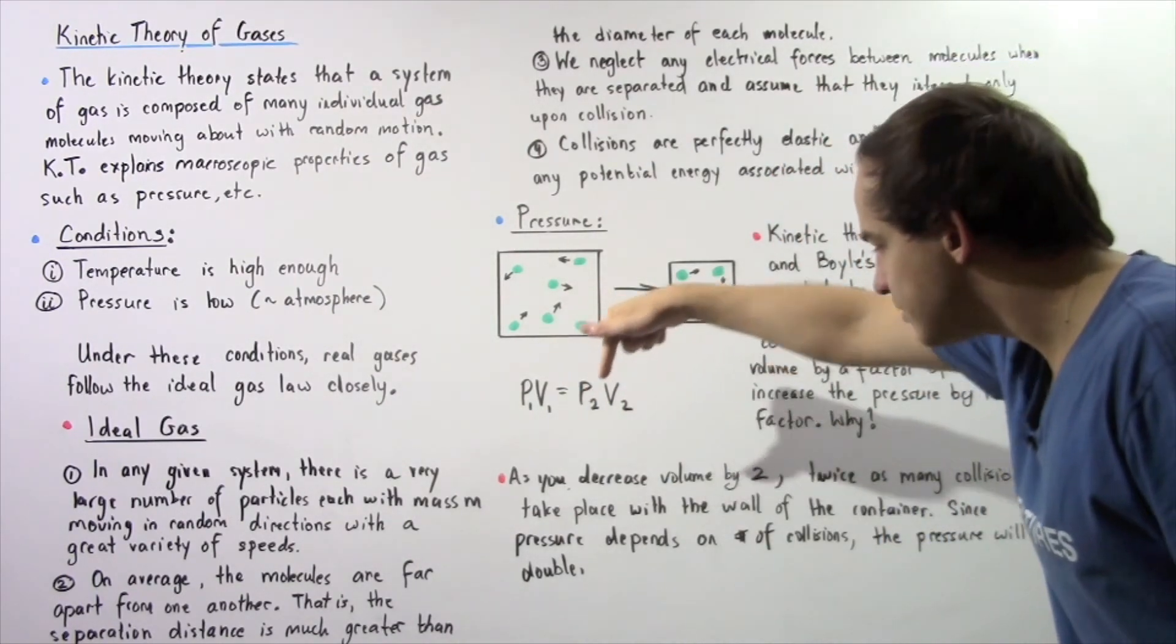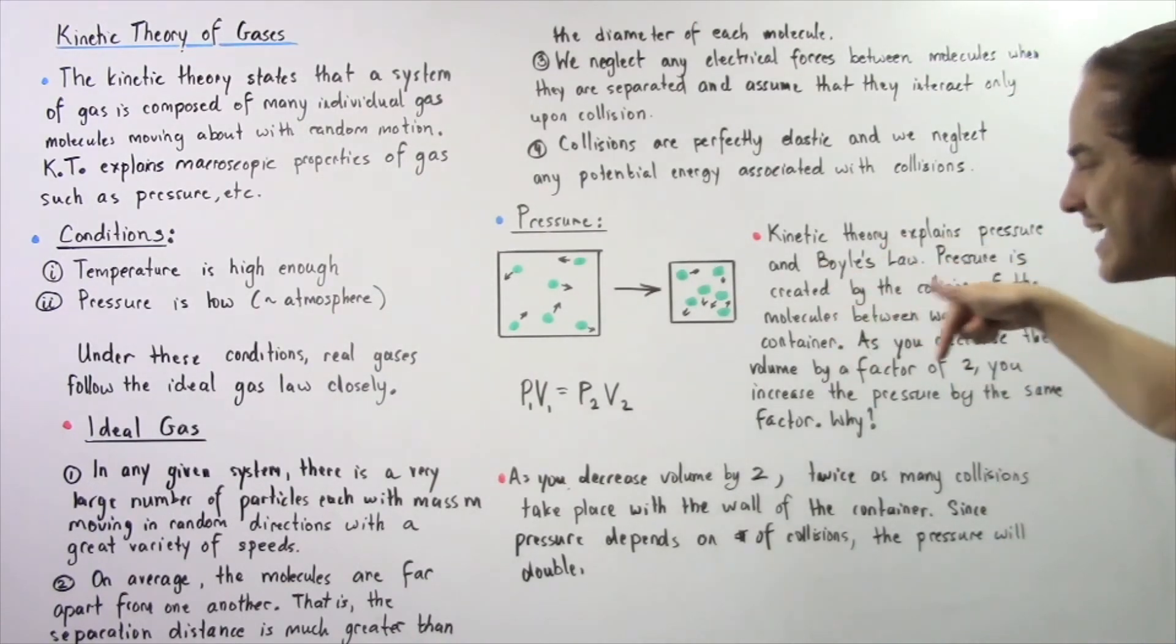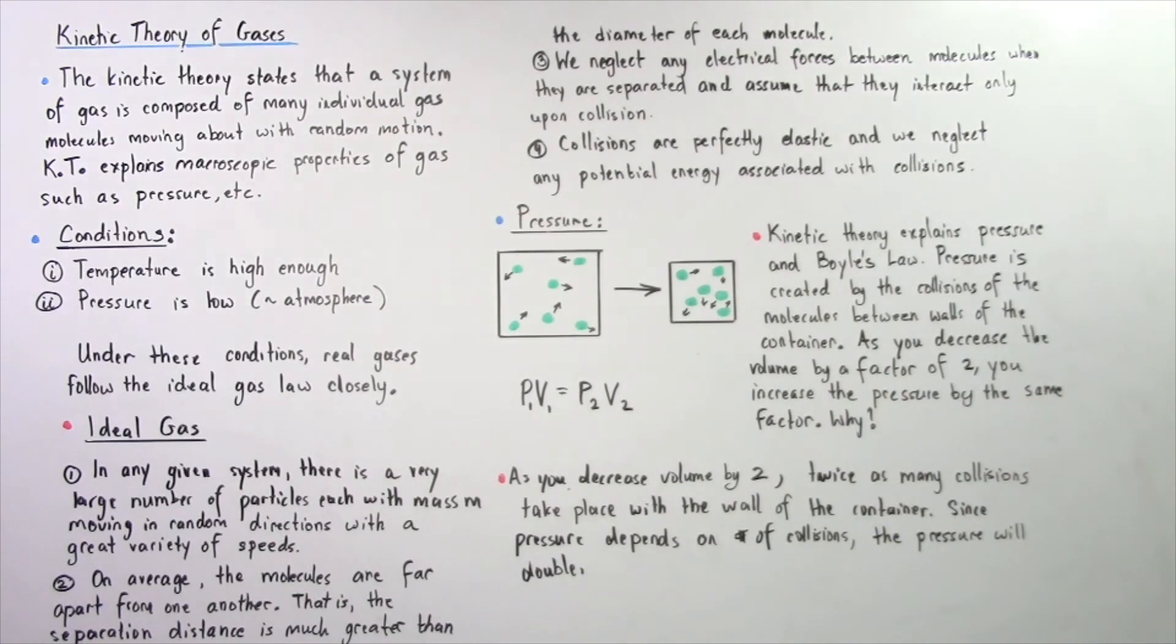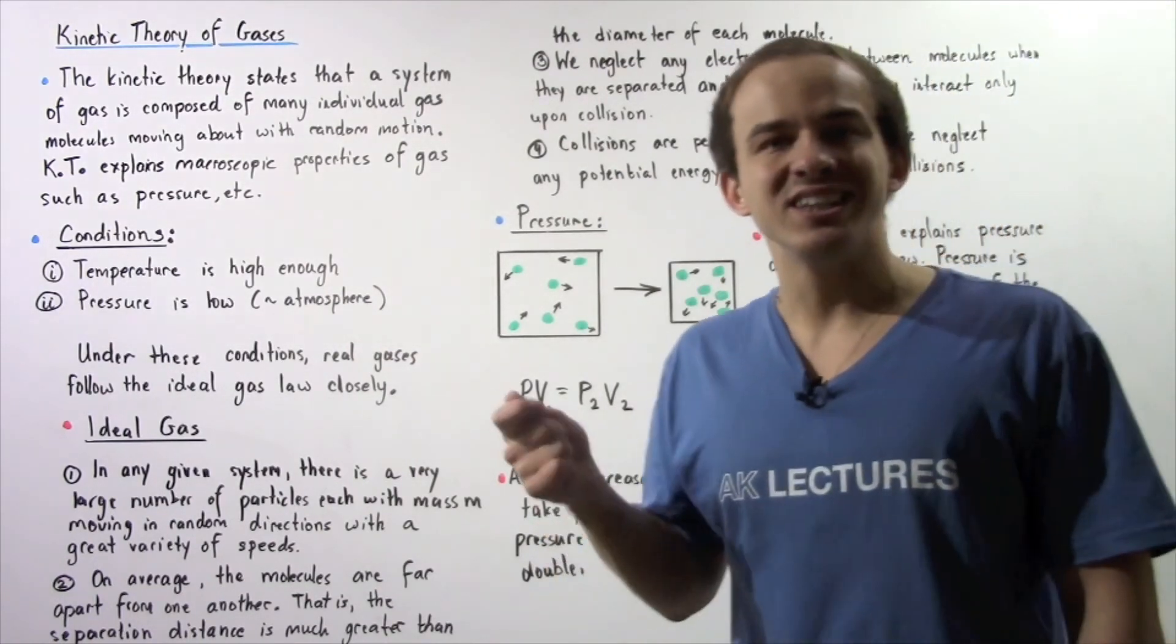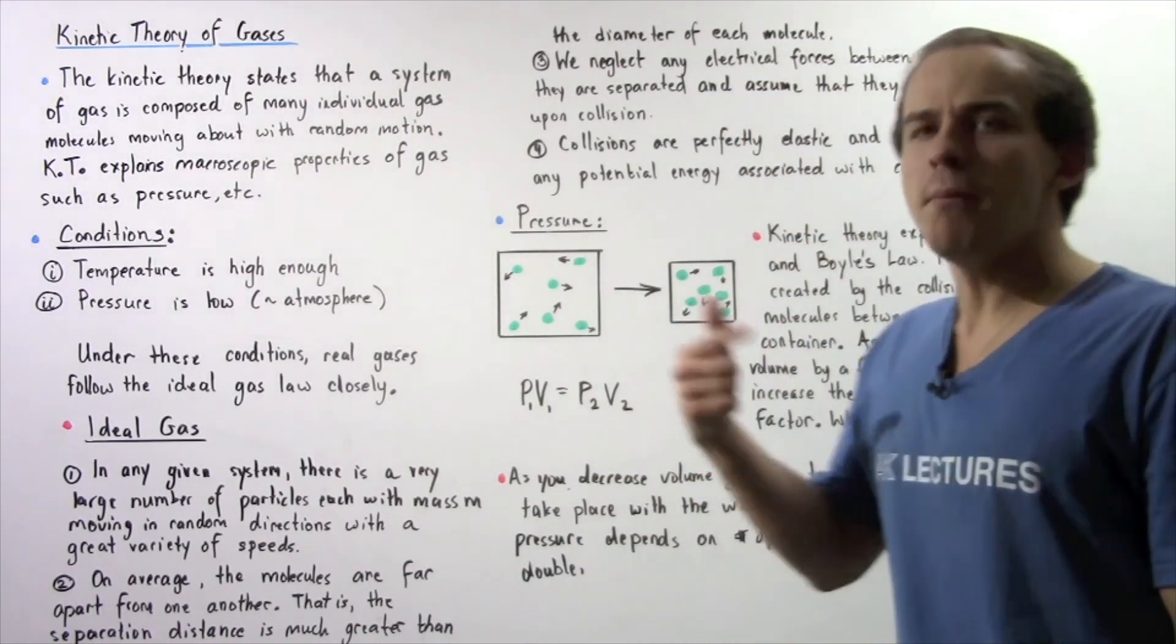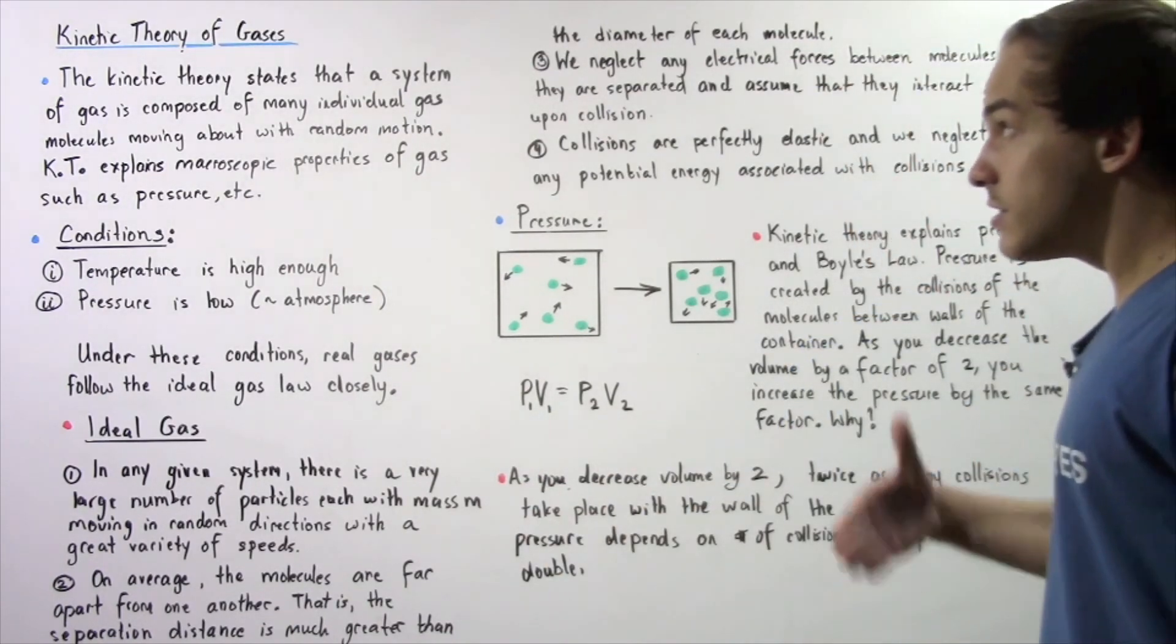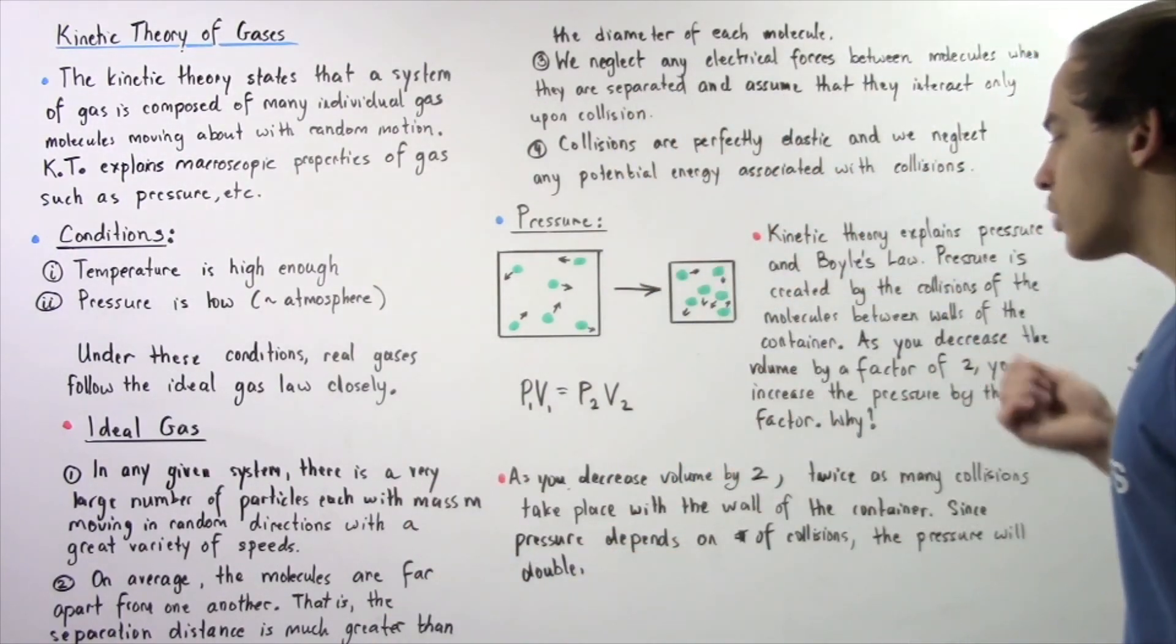So it turns out that as you decrease the volume by a factor of two, twice as many collisions take place with the wall of the container. And since pressure depends on the number of collisions between the molecules and the walls of the container, because the number of collisions doubles, the pressure also doubles. So once again, the kinetic theory of gas helps explain things like pressure.